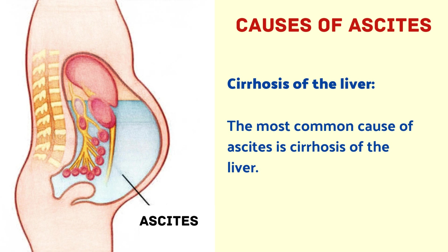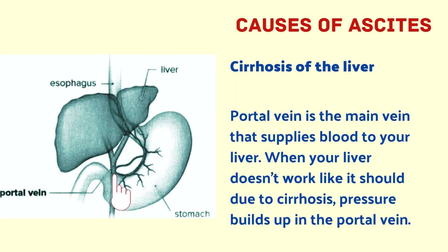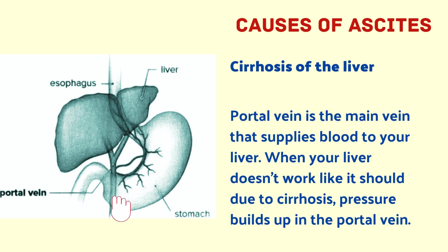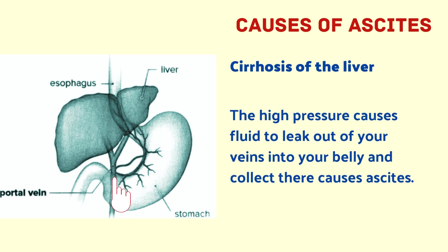Now let us see the causes of ascites. The first cause is cirrhosis of the liver — the most common cause of ascites. The portal vein is the main vein that supplies blood to your liver. When your liver doesn't work properly due to cirrhosis, pressure builds up in the portal vein. The high pressure causes fluid to leak out of your veins into your belly and collect there, causing ascites.